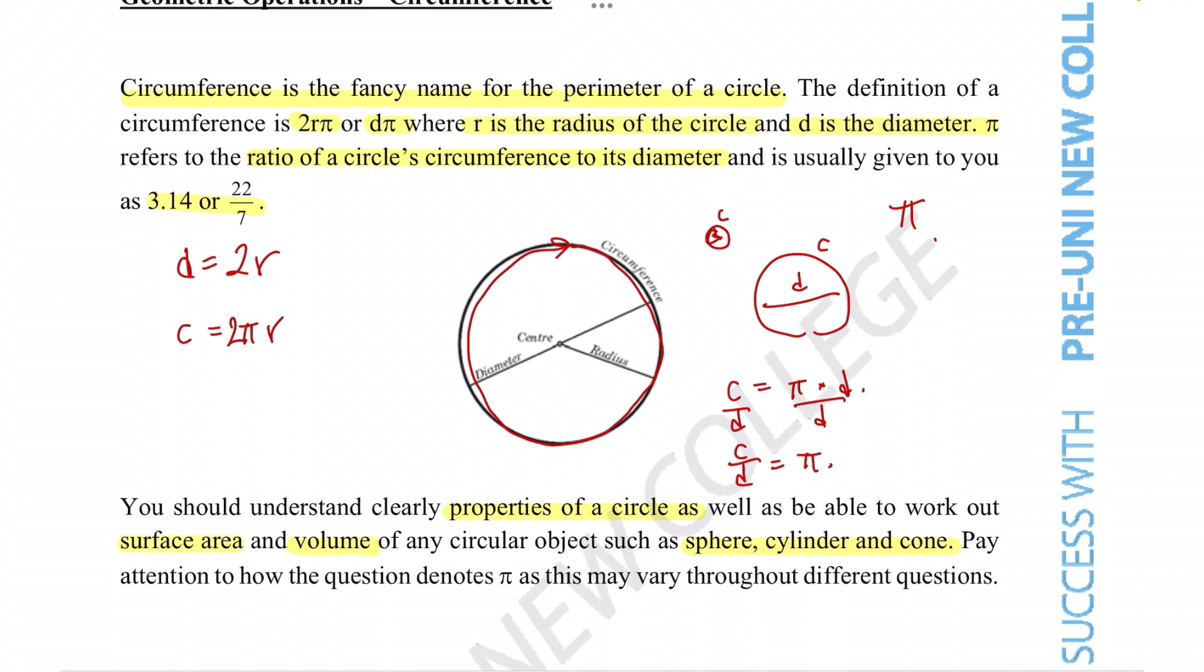So what we do is we kind of rounded up to the nearest two decimal points or use a fraction that gives us a very similar number to estimate pi rather than actually use the entire infinitely long number because we can see that that is quite a bit of an effort to use.